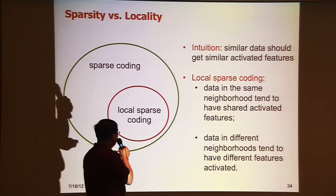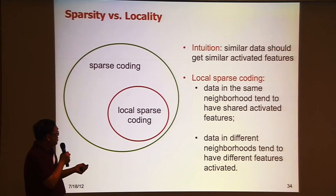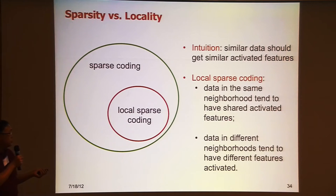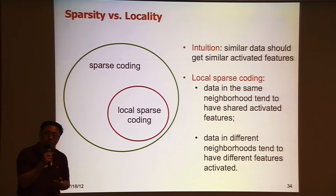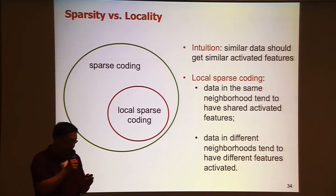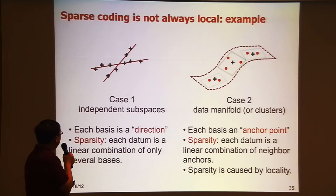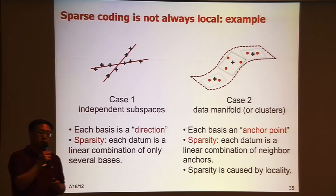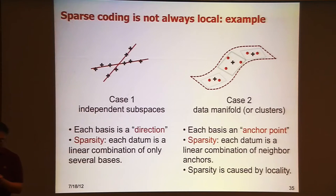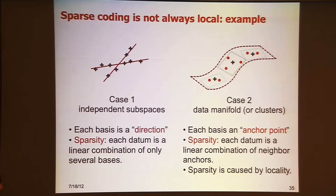Local sparse coding means data in the same neighborhood tend to have shared activated features. But sparse coding is not always local. Let me give you one example — look at the left side. In this case, it's more like independent subspaces or ICA-type things. The data points are distributed in a certain way, and you can find two kinds of dimensions.